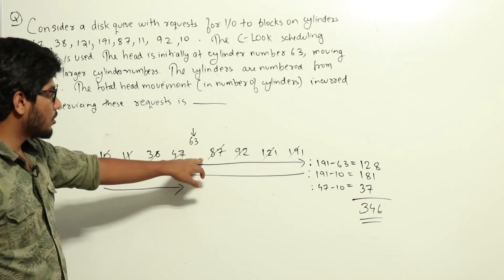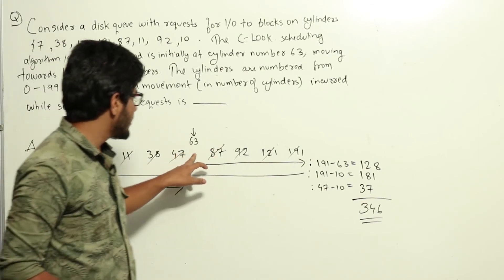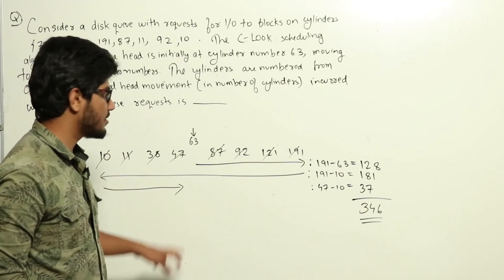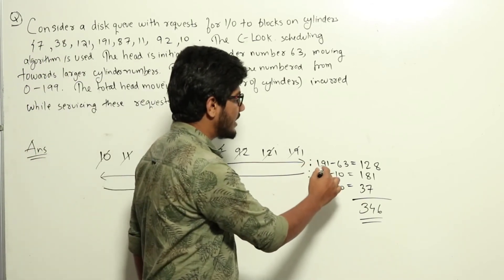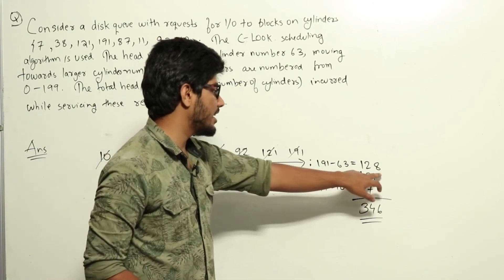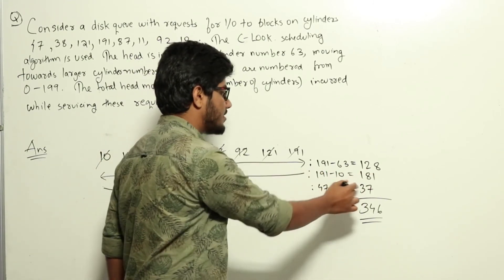So total head movements incurred is 63 to 191, 191 to 10, and then 10 to 47. The total movements are 191 minus 63, that is 128, plus 191 minus 10, that is 181, plus 47 minus 10, that is 37.